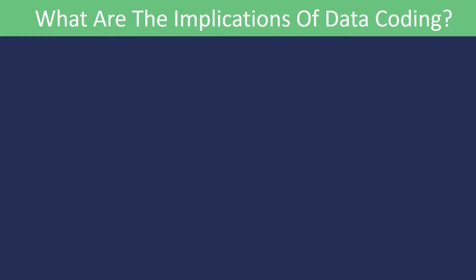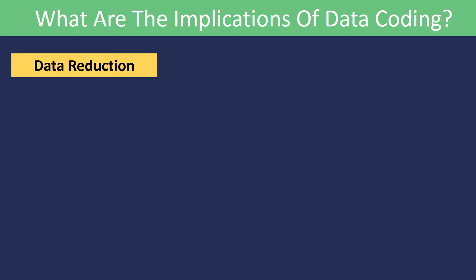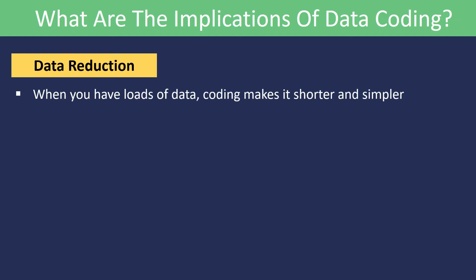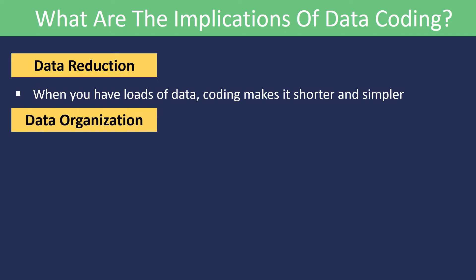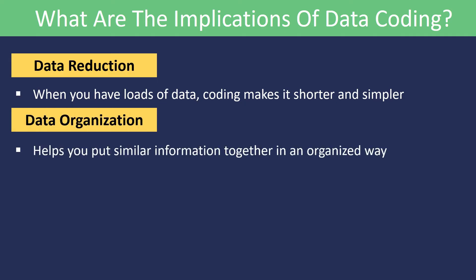What are the implications of data coding? Data reduction: when you have lots of data, coding makes it shorter and simpler, making it way easier to study large sets of data. Data organization: coding helps you put similar information together in an organized way, so you can manage and study your data more effectively.